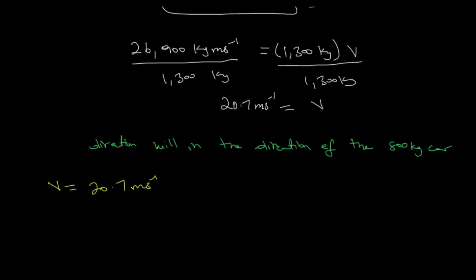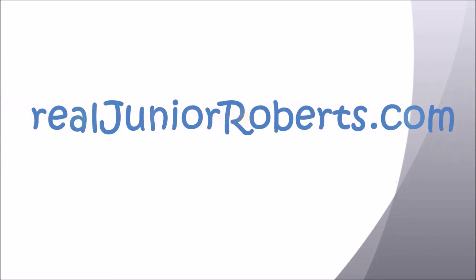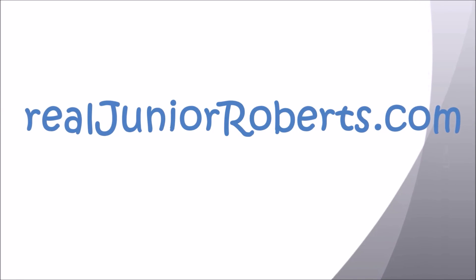So our final answer is: velocity v equals 20.7 meters per second in the direction of the 800 kilogram car. You can find more great physics tutorials like these on my website at realgeneroberts.com.